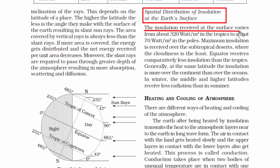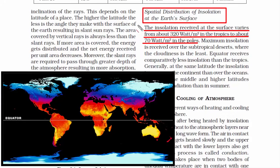The amount of incoming solar energy received at the surface varies — about 320 watt per meter square in the tropics, to about 70 watt per meter square at the poles. So clearly the north and south poles receive less solar energy. In other words, as we go away from the equator, the amount of solar energy falling on earth's surface reduces.